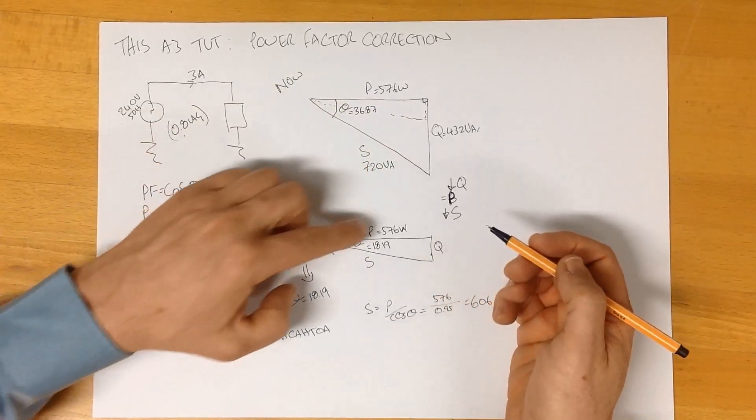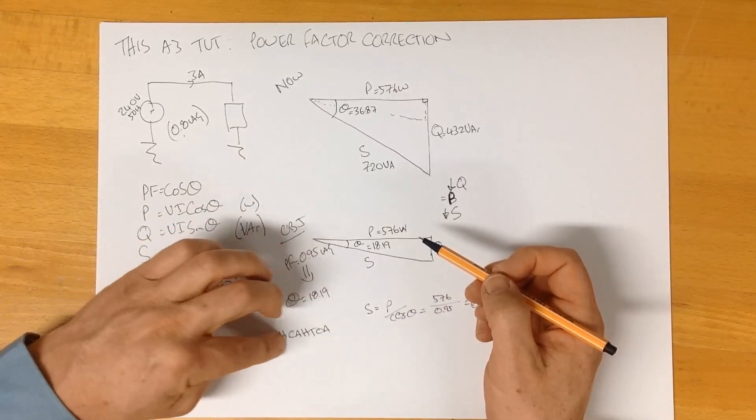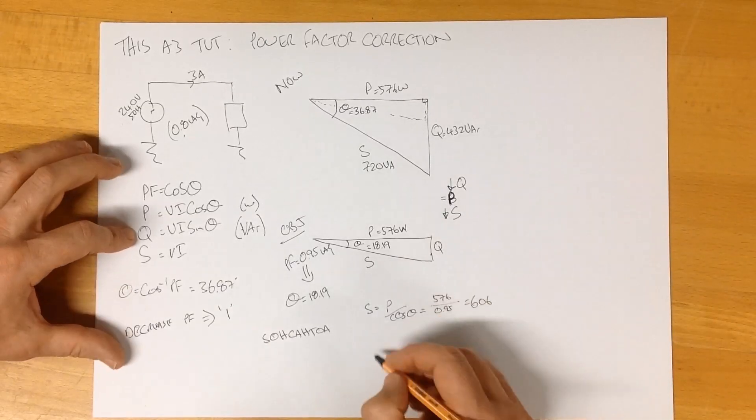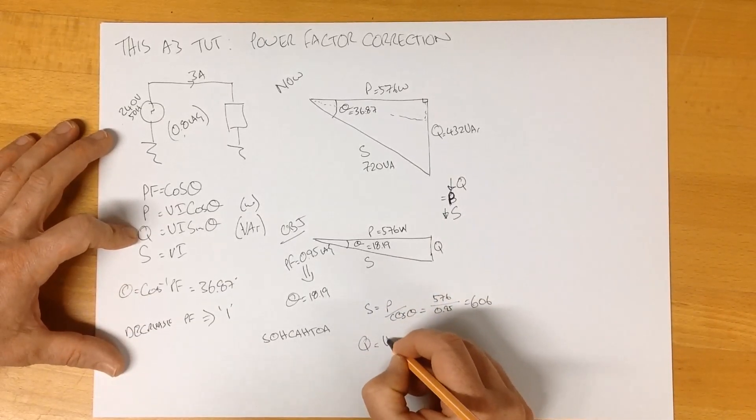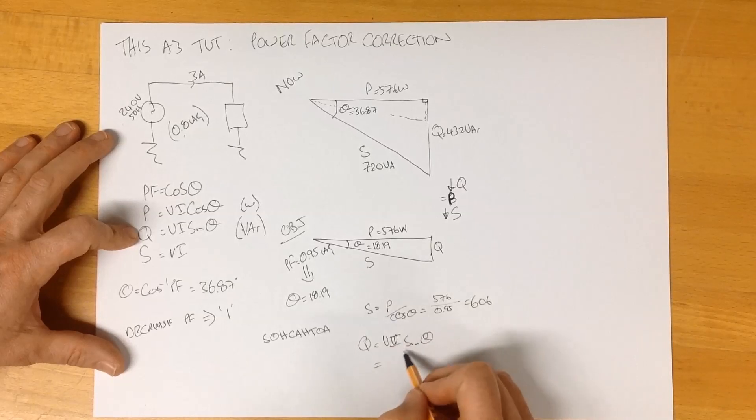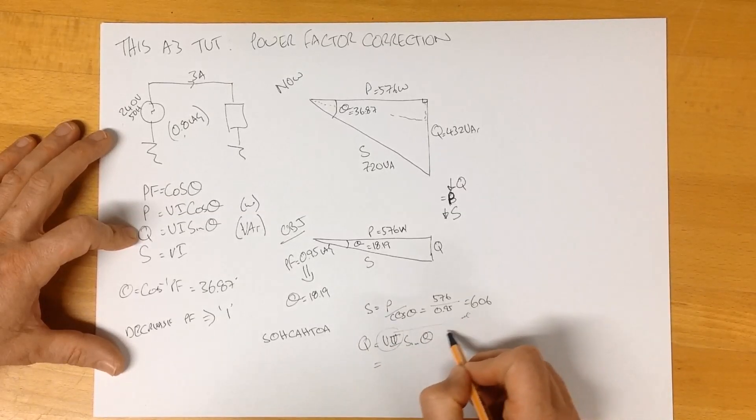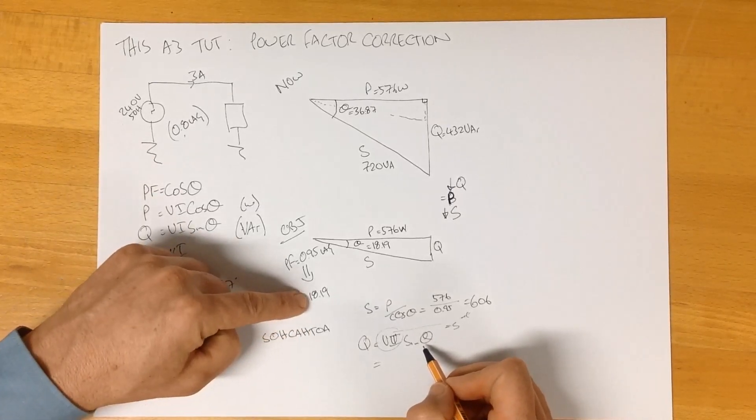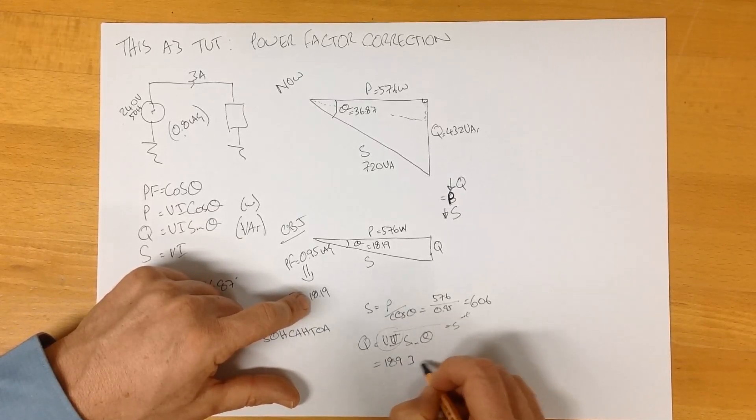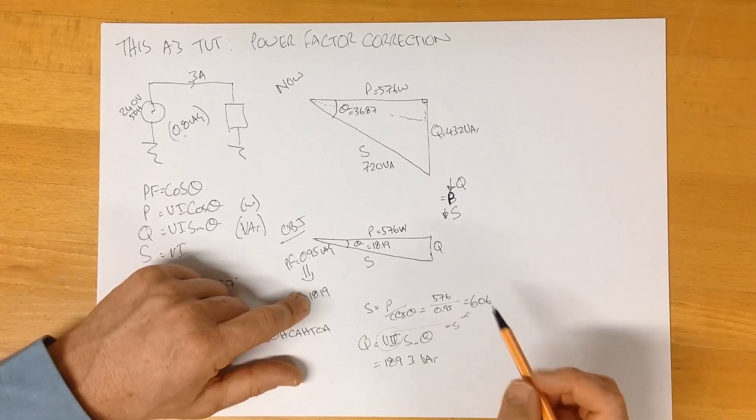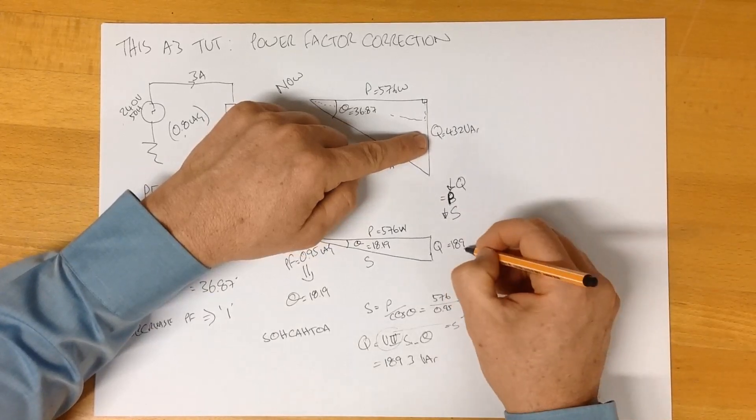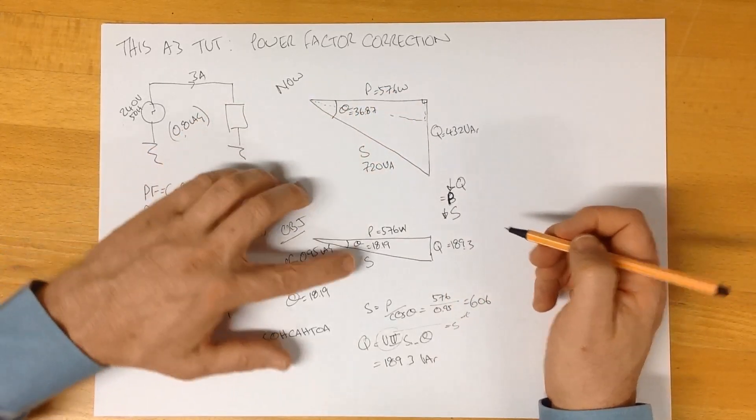We can similarly go through and we can find Q. Again, we could go back to these rules here, or we can use this equation here. They're both going to give us the same answer. I'll use this equation here. So, Q is Vi, the sine of our new angle. We've already established what Vi is. The sine of our angle, our new angle is 18.19. So, we can go through and we can solve that. And we end up with 189.3 VARs. Again, this number here should be less than this, and it is. So, we know we're on the right track there.